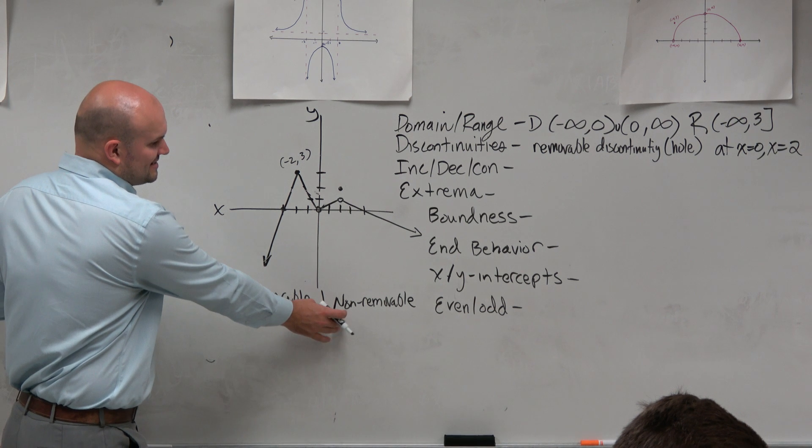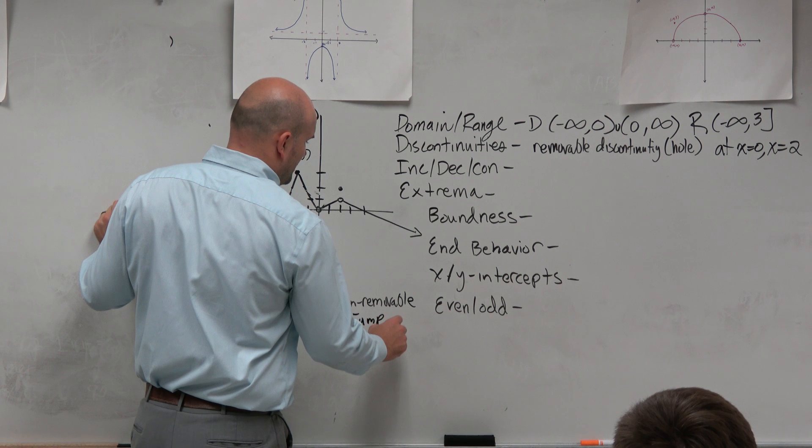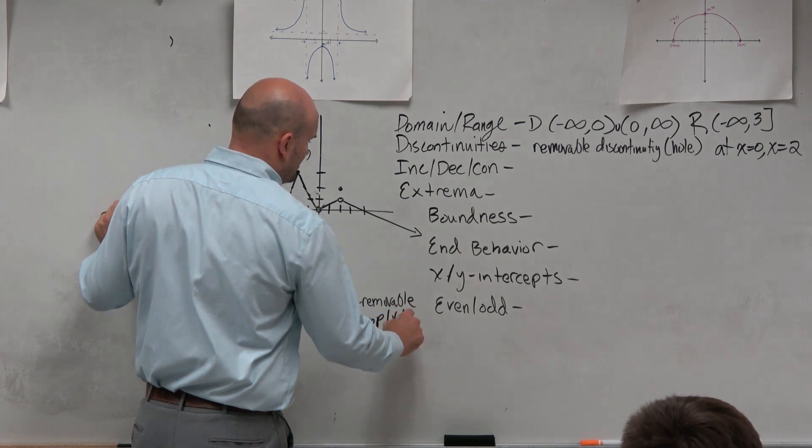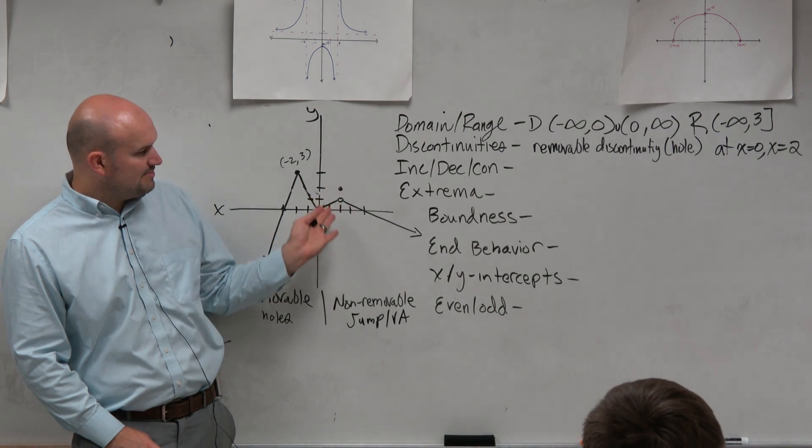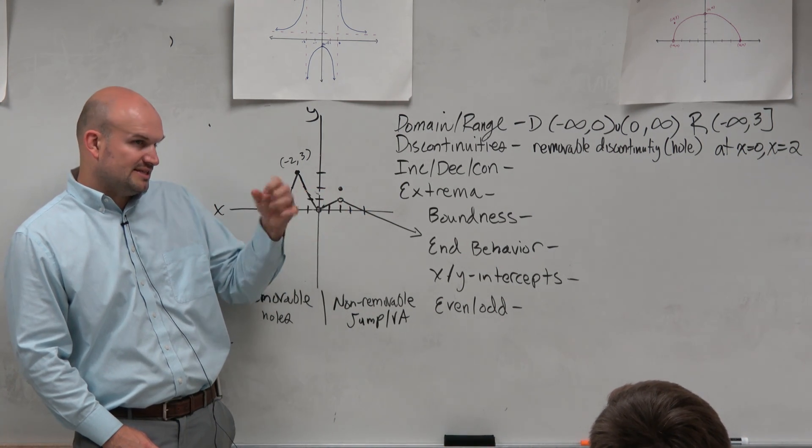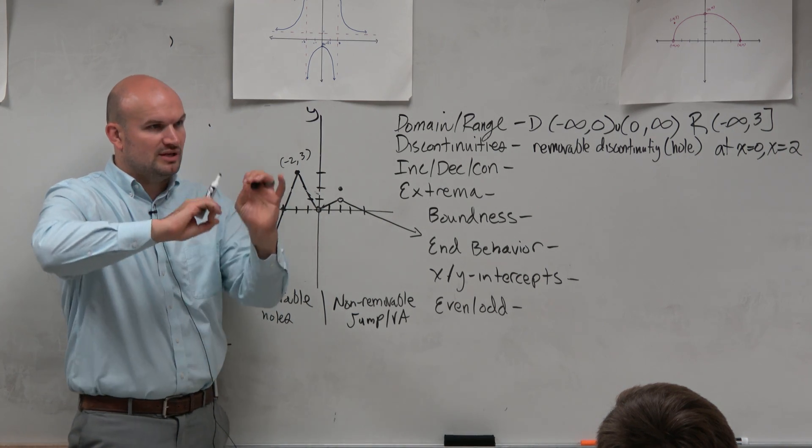And now to identify what the non-removable are, that is a jump discontinuity or a vertical asymptote. So jump discontinuities, some people get confused with jumps and holes because they see the open circle, closed circle. Just remember, a jump is like from one function to the next.